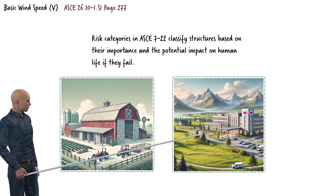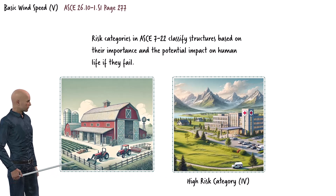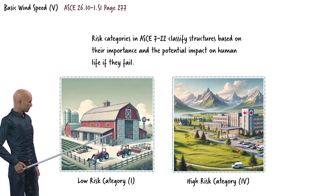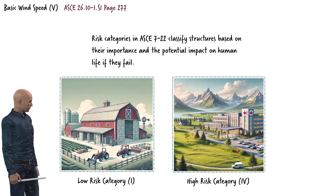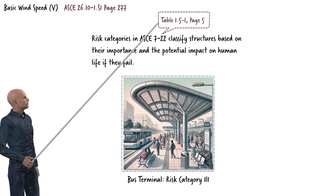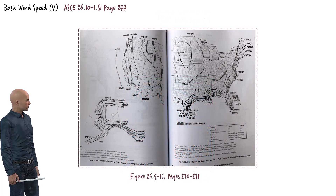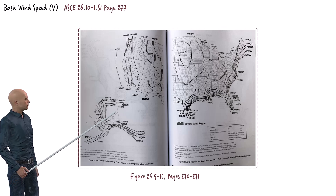Not all structures are created equal. ASCE categorizes structures based on the risk they pose to human life if they fail. A hospital or an emergency shelter needs to be extra sturdy — these fall into higher risk categories and are designed to withstand higher wind speeds. On the other hand, structures like agricultural buildings, which pose less risk to human life, can be designed for lower wind speeds. These adjustments ensure we prioritize safety for critical infrastructure while keeping designs economical. For our bus terminal, since it is a high-occupancy structure, it falls under risk category 3, as explained in Table 1.5-1 on page 5 of the standard. According to the wind speed map for category 3, found on pages 270 and 271, the basic wind speed for the coastal region of Southern California where our bus terminal is located is 45 meters per second.